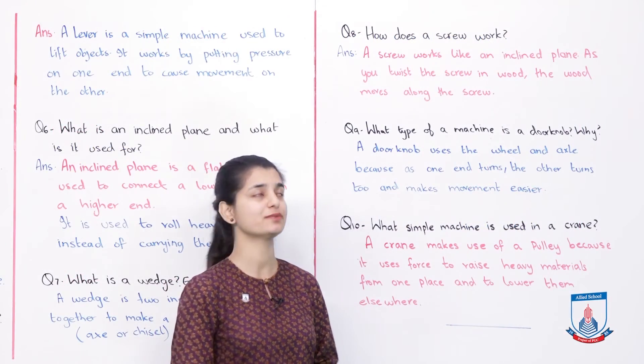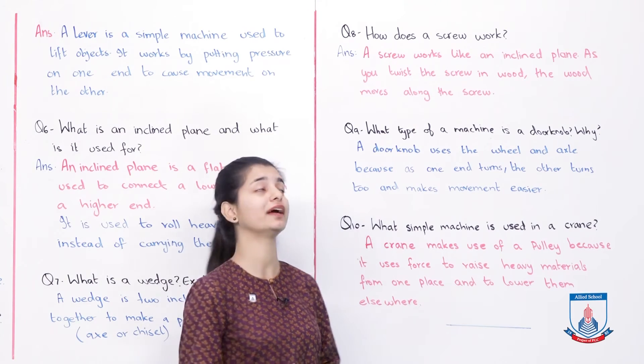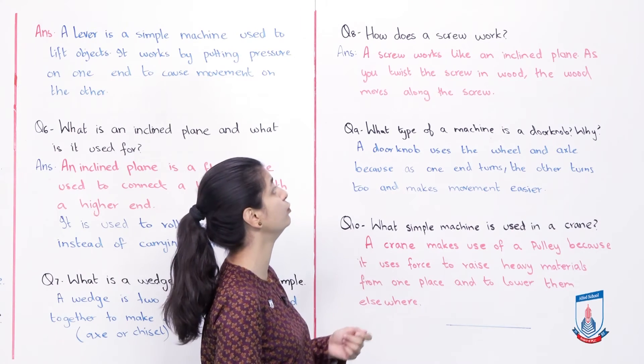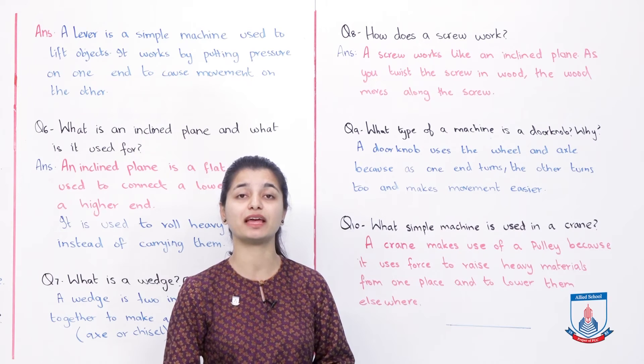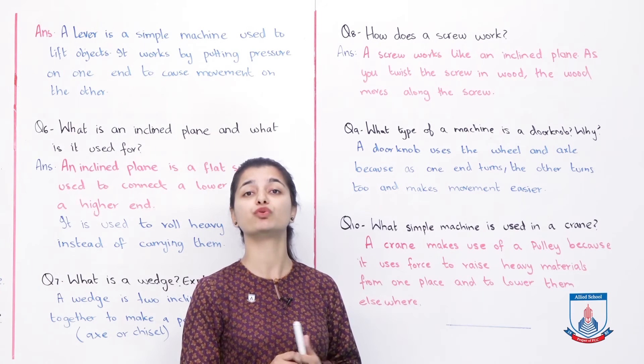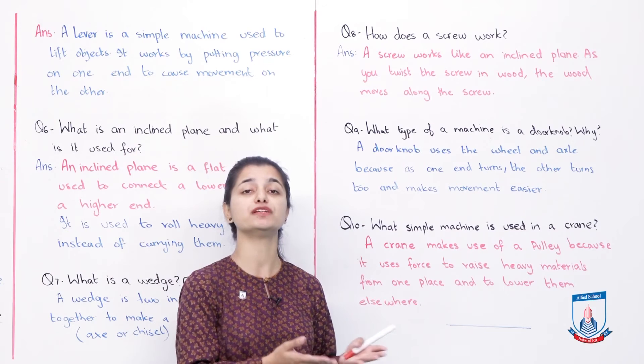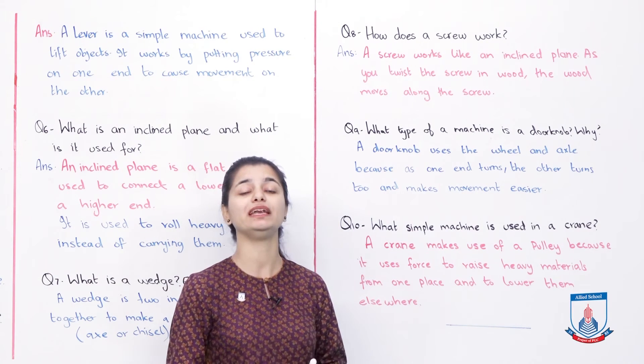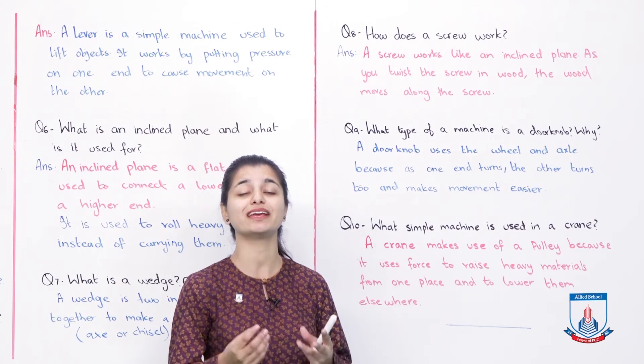Question 8: How does a screw work? A screw works like an inclined plane. As you twist the screw into wood, the wood moves along the screw. In this manner, you have used the screw like an inclined plane wrapping around.